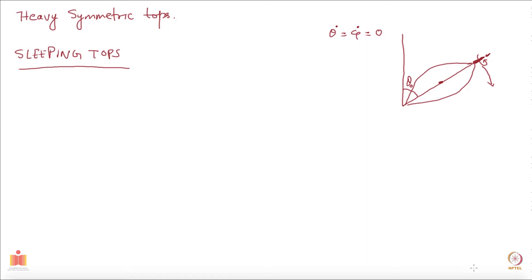Imagine we are looking at theta equal to 0. The top is in a vertical position. Here is your vertical and here is our top.